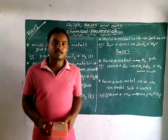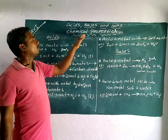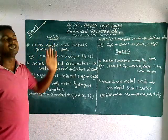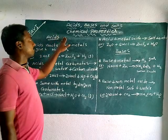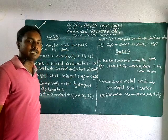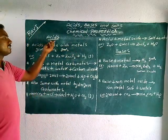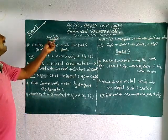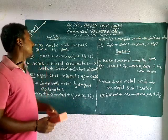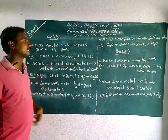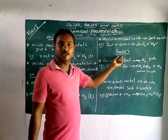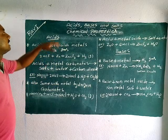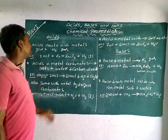Good morning students. Today our class is on chemical properties of acids, bases, and salts. In the previous class we discussed acids and bases. Acids are sour to taste and turn blue litmus to red litmus. Bases are slippery and turn red litmus to blue litmus. In this class we will discuss the chemical properties of acids and bases.